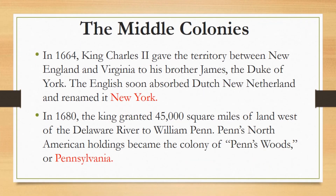In 1664, King Charles II gave the territory between New England and Virginia — much of which was already occupied by Dutch traders and landowners called patrons — to his brother James, the Duke of York. The English soon absorbed Dutch New Netherland and renamed it New York, but most of the Dutch people stayed put. This made New York one of the most diverse and prosperous colonies in the New World.